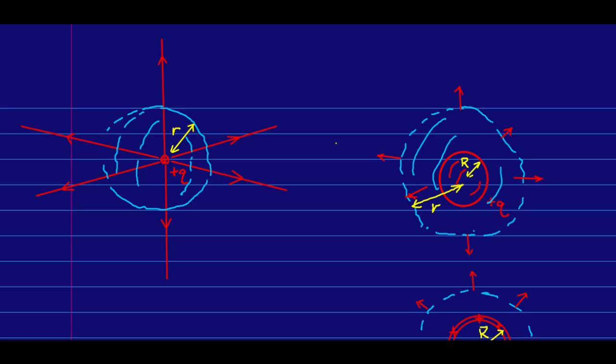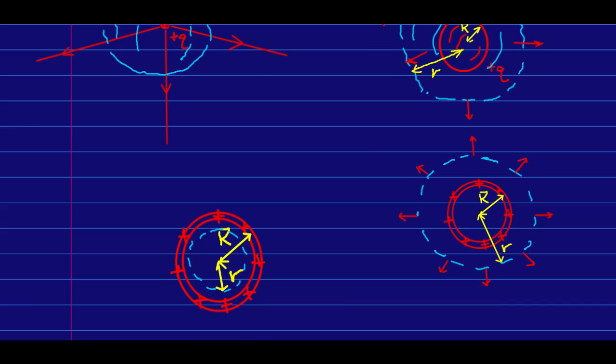But we can get one more piece of information out of this simple use of Gauss's law. Let's look at a two-dimensional picture. So here is the spherical surface, and here is the sphere.